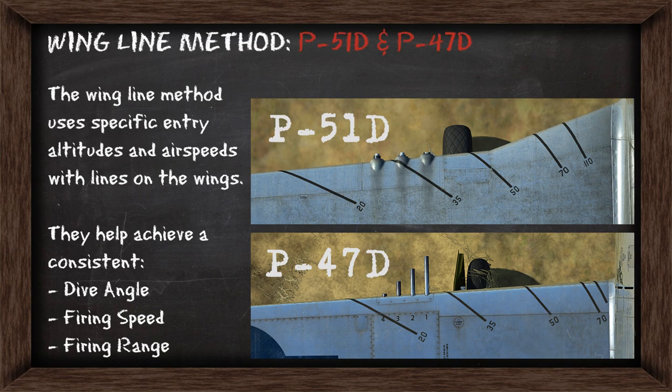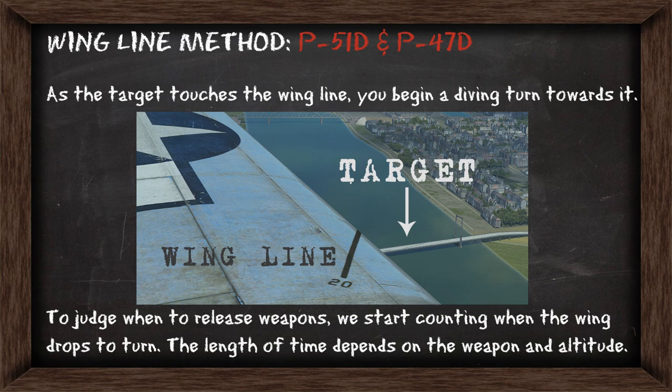In the wingline method, you'll use specific entry altitudes and airspeeds based on the lines on the wings that you see in the pictures. When you use them, they'll help achieve a consistent dive angle, firing speed, and firing range. The basic idea is that as the target touches the wingline, you'll begin a diving turn towards it. To judge when to actually release your weapons, you'll start counting when the wing drops to begin that turn. The length of time will depend on the weapon you're using and the altitude you start with.